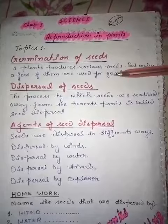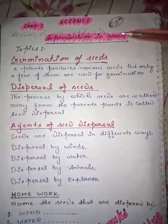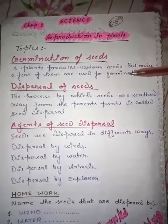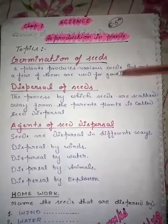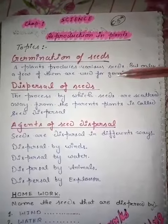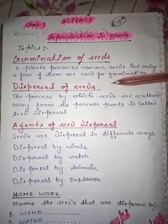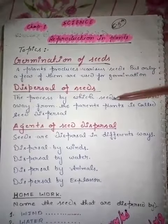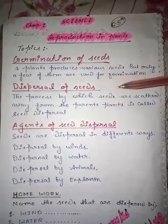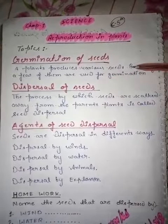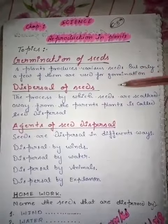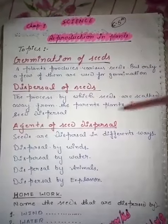Seed dispersal can be divided into four parts. These are the agents of seeds. Seeds are dispersed in different ways.